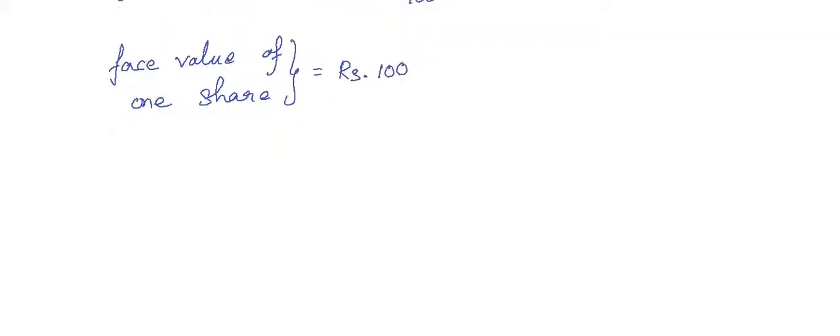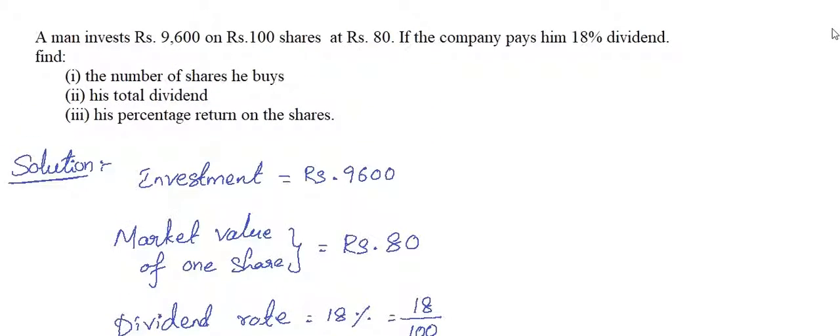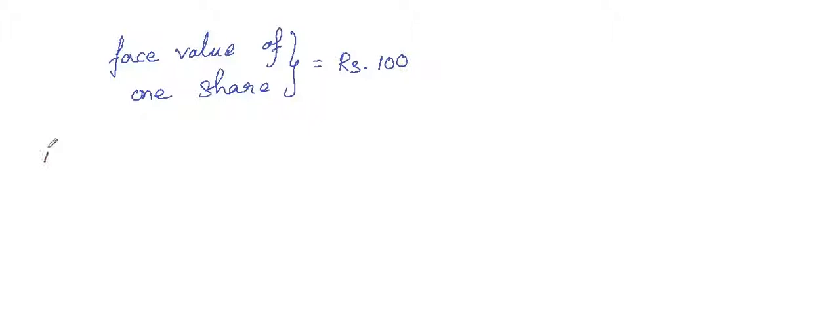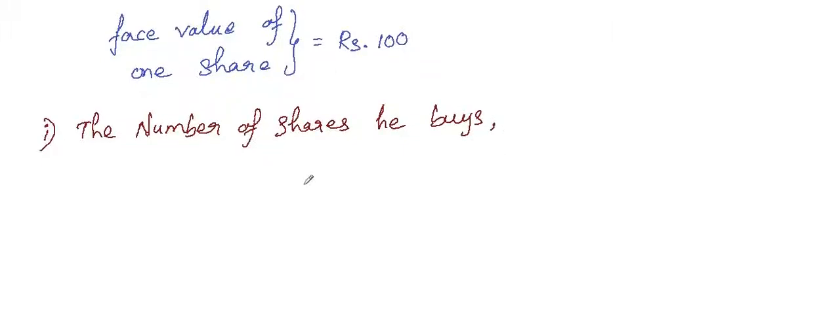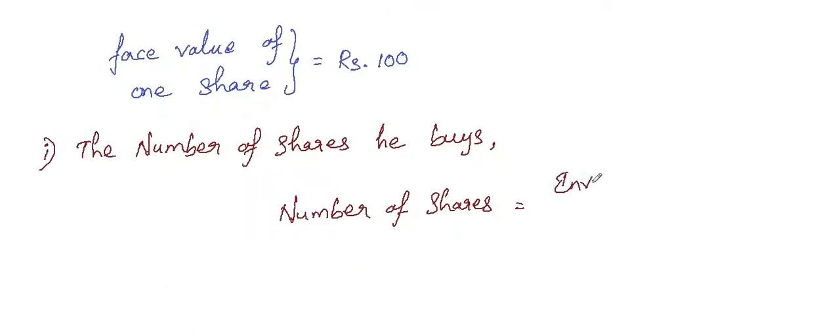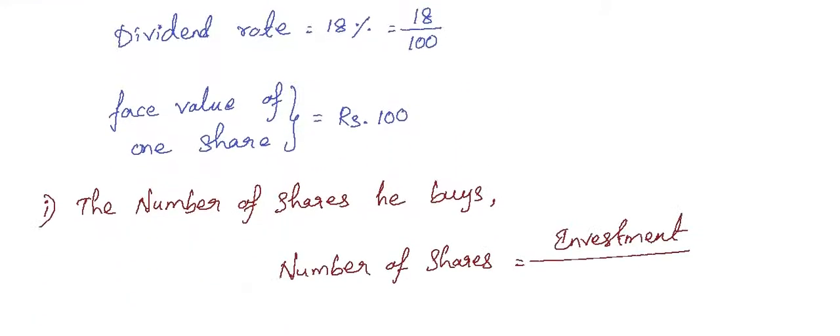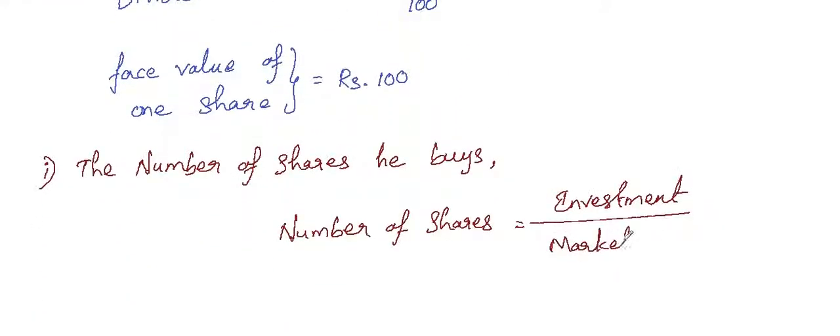Now find the number of shares he buys. The number of shares equals the total investment divided by the share value, which is investment divided by market value or share value.